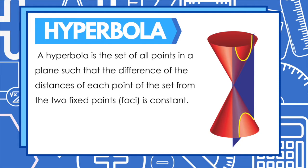Let us recall what a hyperbola is. A hyperbola is the set of all points in a plane such that the difference of the distances of each point of the set from the two fixed points, which we call foci, is constant. As seen in this figure, a hyperbola is formed if a plane passes through a double nappe cone at exactly the two cones.